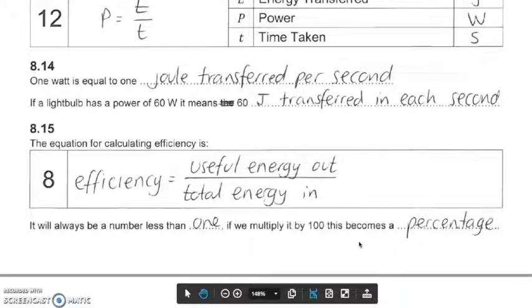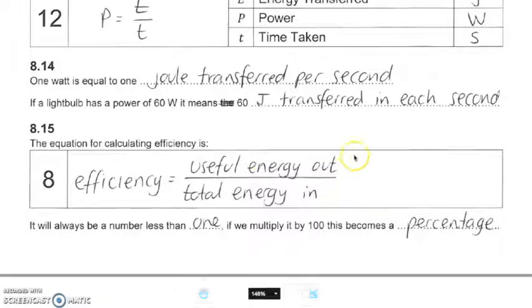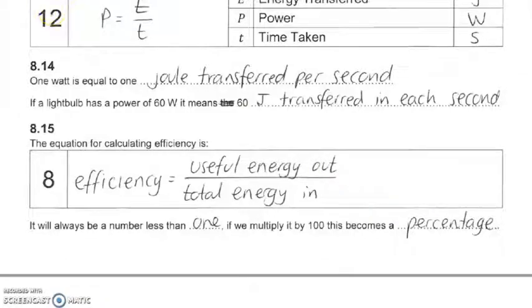Finally, the equation for efficiency is the useful energy output divided by the total energy input. If you multiply that by 100, you get the percentage efficiency.